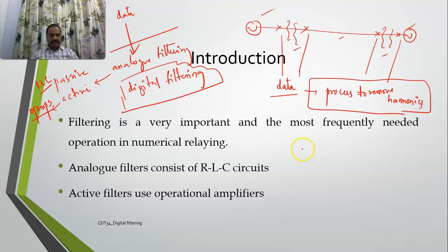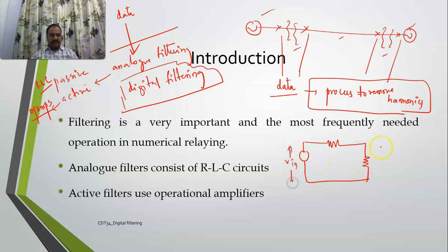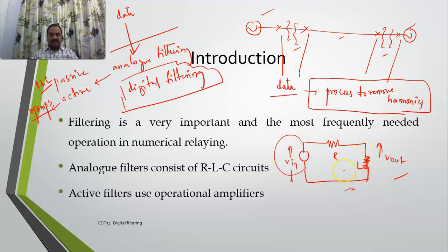What is the major problem? Even a simple RLC circuit — source, V input, V output, L, and R — will act as a filter, allowing only certain frequencies through. This is a simple representation of an analog passive filter. Similarly, you can have analog active filters employing op-amps as well.